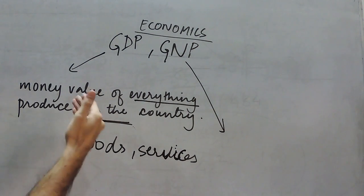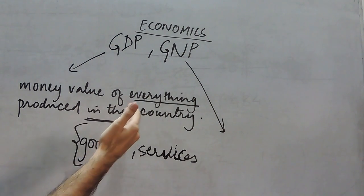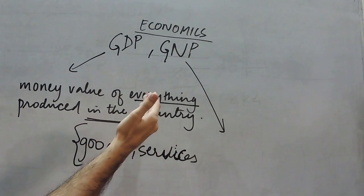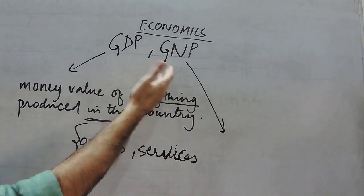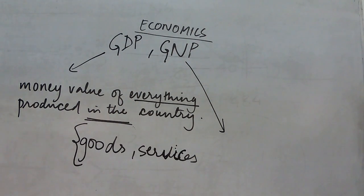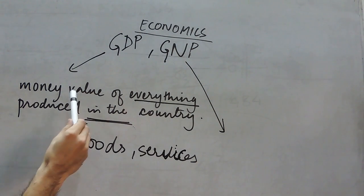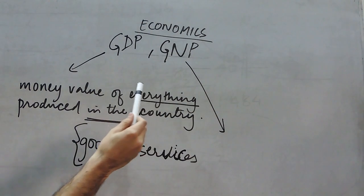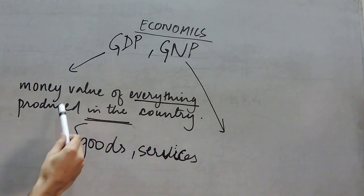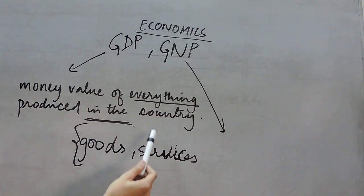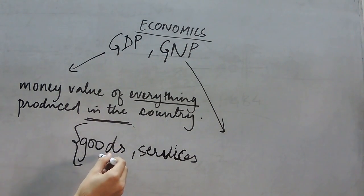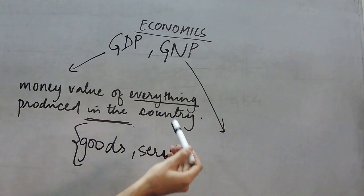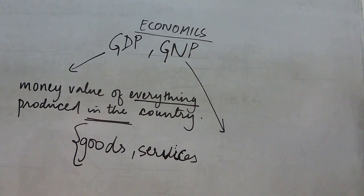By nationals we mean people who are citizens of a country. So if we were to calculate the GNP of India, we would calculate the money value of everything produced by Indians, whether they live in India or abroad.